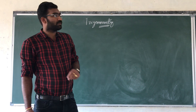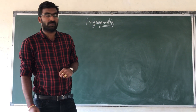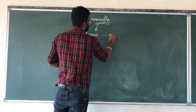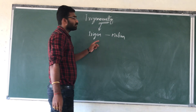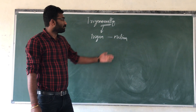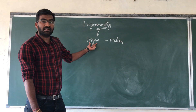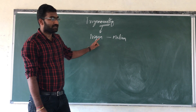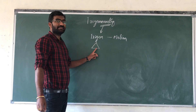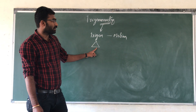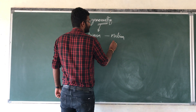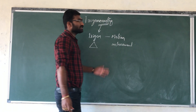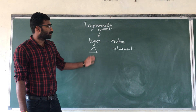Trigonometry is derived from Greek words, which is made up of two words — trigon and metron. Trigon means triangle and metron means measurement. Trigon is also made up of two words: tri means three, and gon means sided. So in total, trigonometry means three-sided, which refers to a triangle. And metron means measurement. So in this chapter, we are basically going to study about measurement of triangles.